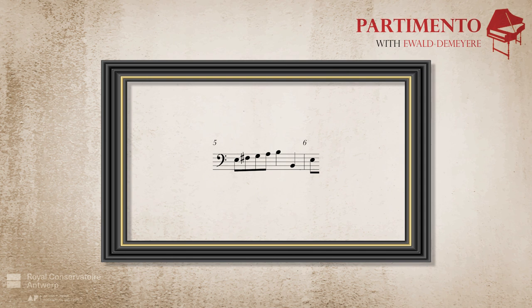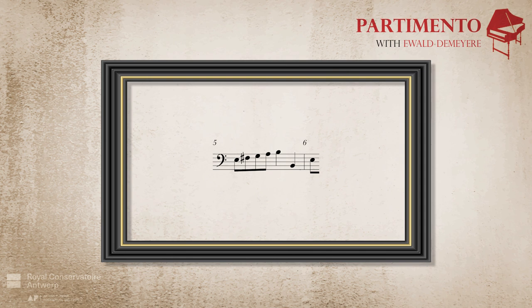One could realize bar 5 by playing a quarter note triad in the right hand on the first beat, a sixth chord on the second beat, and a cadenza composta on beats 3 and 4 — that is, a 5-4 chord on the third beat and its resolution on the fourth beat. In this realization, the F-sharp and the A in the bass in the first half of bar 5 act as passing notes.